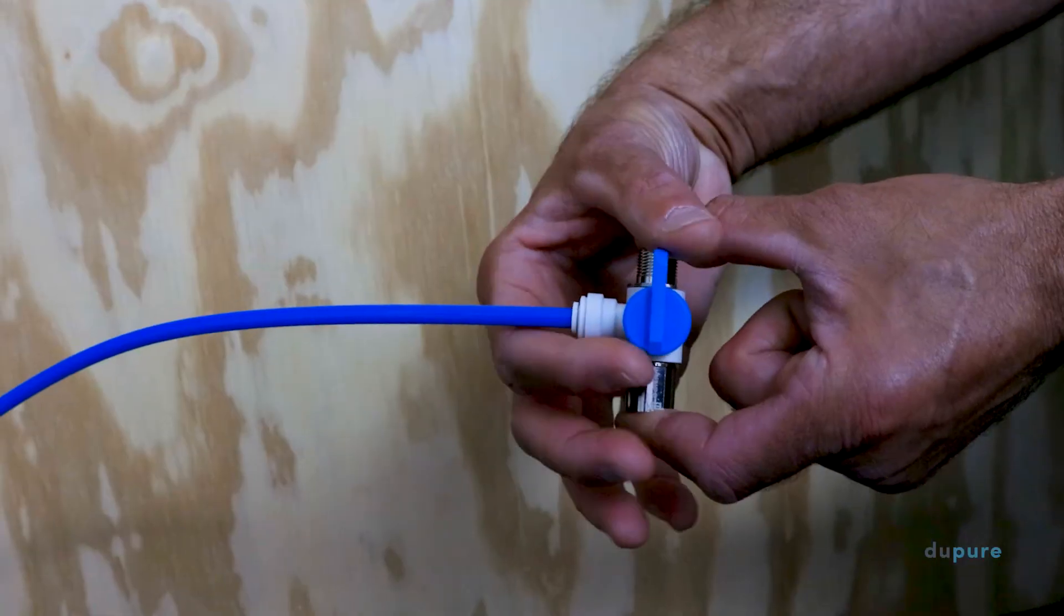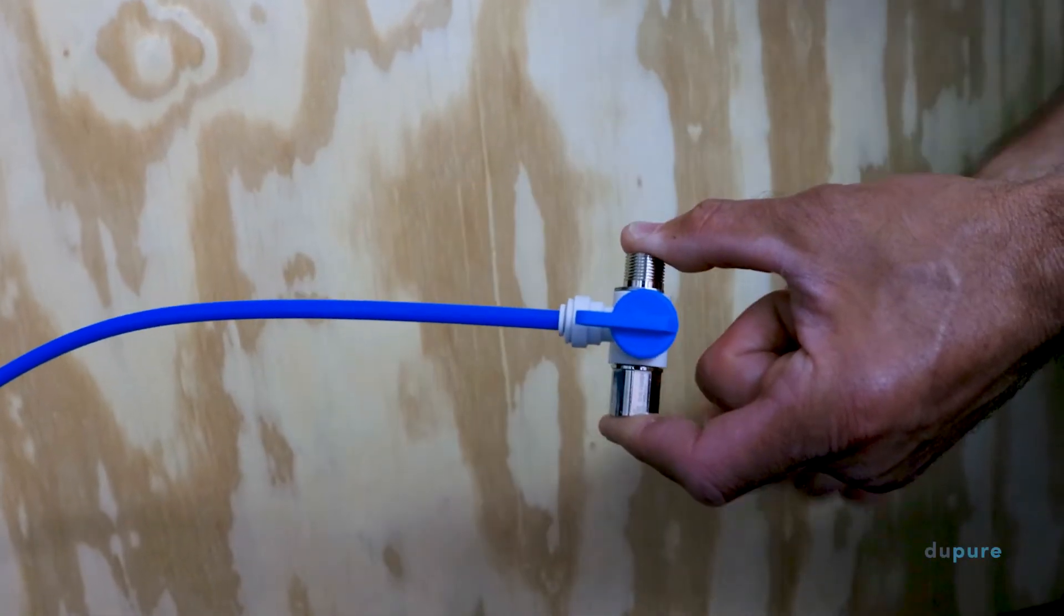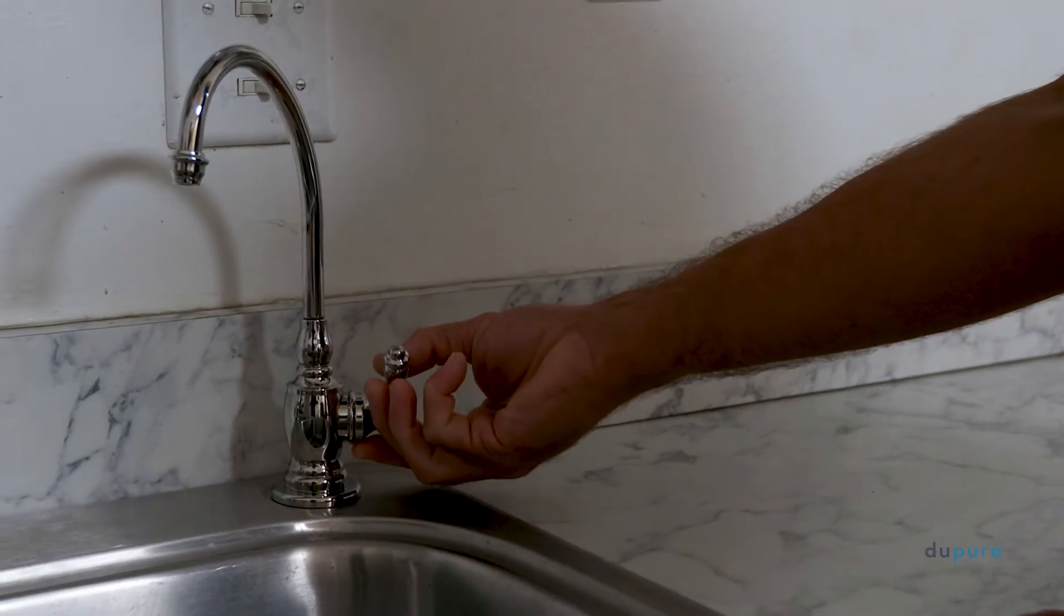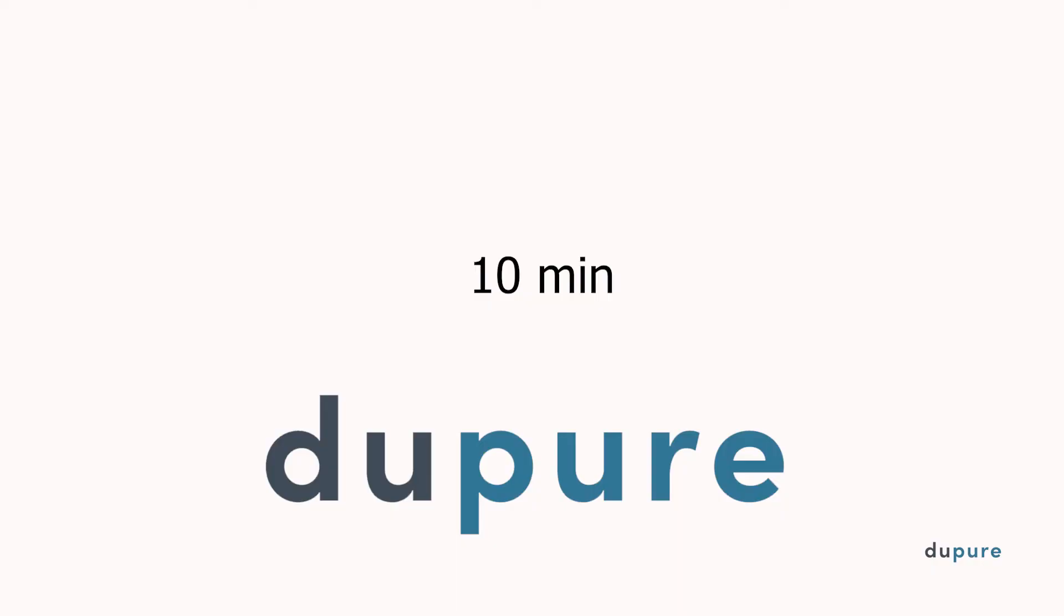Once the membrane is properly installed, you will begin the flushing procedure. Start by turning the feed valve on. Once there is a thin drizzle from the spigot, turn it off.